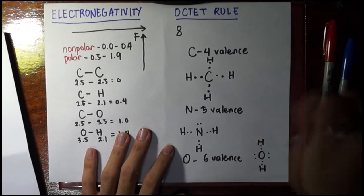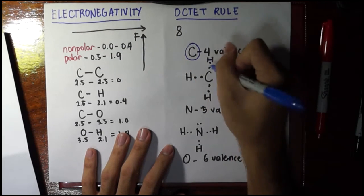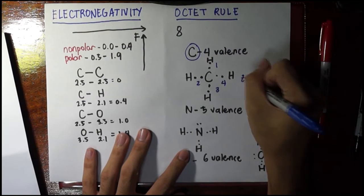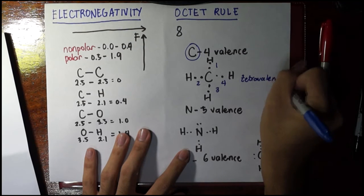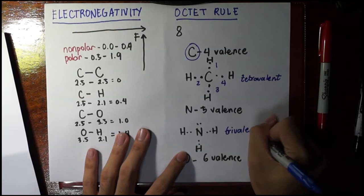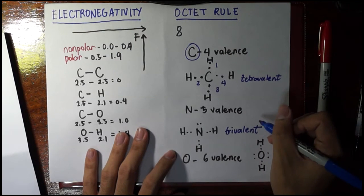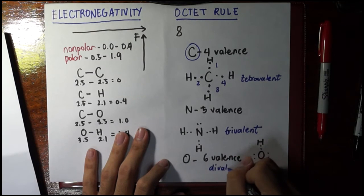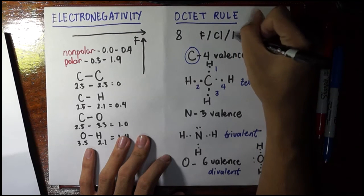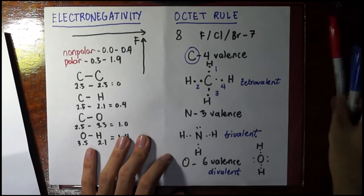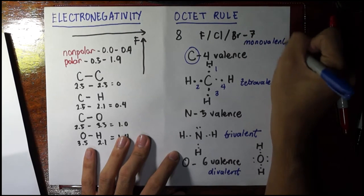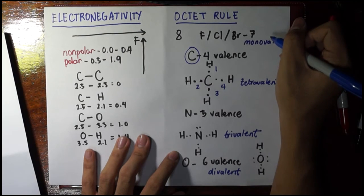This is the explanation as to why carbon should always have four bonds with it. So we say that this is tetravalent. Nitrogen, we get the drill now, right? It should be trivalent, or it can accommodate three more bonds, and oxygen is divalent. And also, we have the halogens: fluorine, chlorine, bromine. They have seven valence. And of course, as a pattern, we can say that this is monovalent, of course, meaning it can only have one bond more.